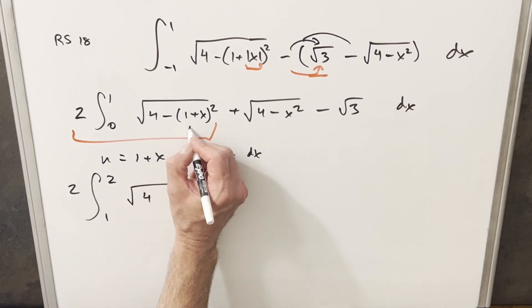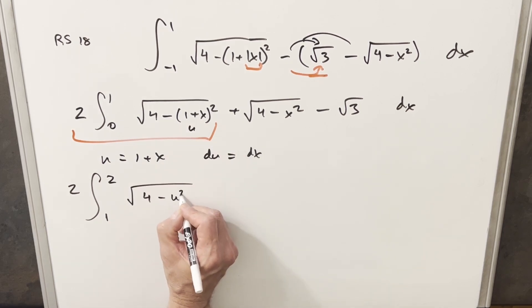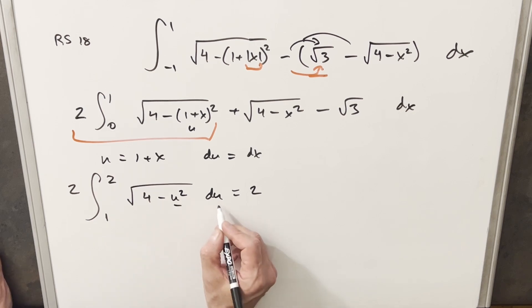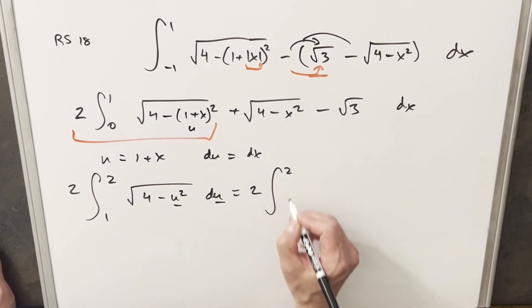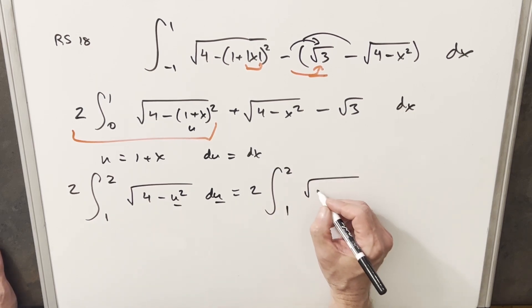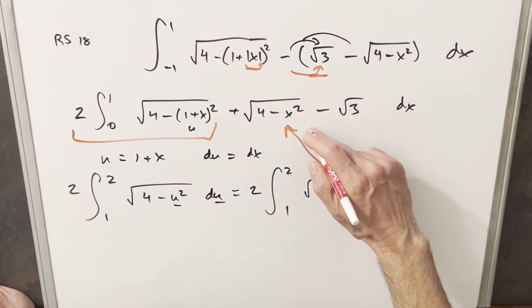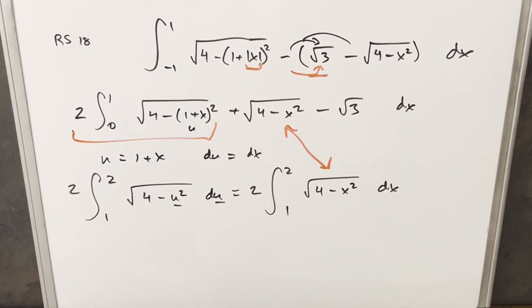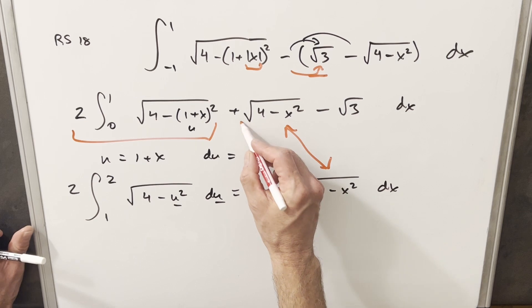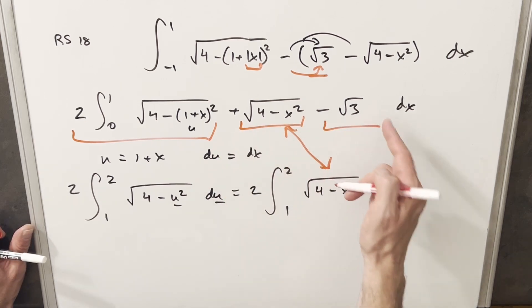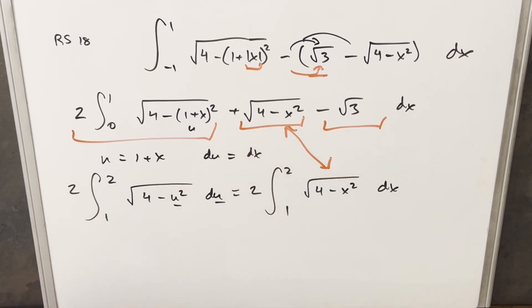Then substituting here, this is just U, so we're going to have four minus U squared DU. From here, what I want to do is just a variable change. This is a definite integral so I can change the variable to whatever I want. I'm going to change it back to X, so we're going to have square root of four minus X squared DX. The interesting thing is we have the exact same integral here and here with just different bounds. That's going to motivate me to bring this into it, so we'll deal with these first two integrals and save the minus square root of three for later.